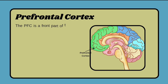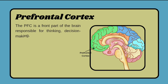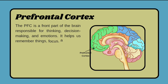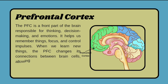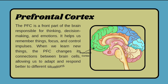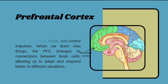The prefrontal cortex is the front part of the brain responsible for thinking, decisions, and emotions. It helps us remember things, focus, and control impulses. When we learn new things, the prefrontal cortex changes its connections between brain cells to adapt.